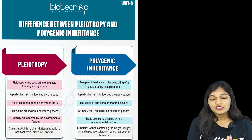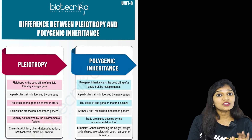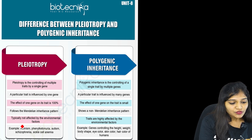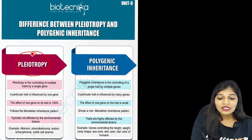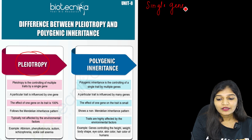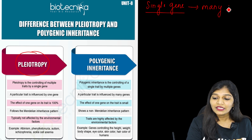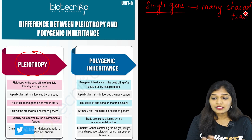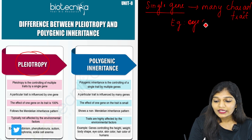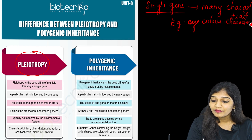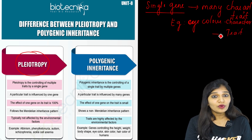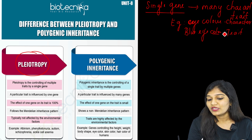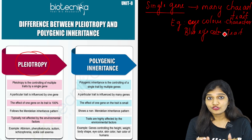This is the difference between pleiotropy and polygenic inheritance from Biotechnica's Conceptica table. Pleiotropy means a single gene controlling many characters or traits. The difference between a character and a trait: eye color is a character, while blue eye color or black eye color is a trait — it is the state of a character. So a single gene controlling many traits is pleiotropy.